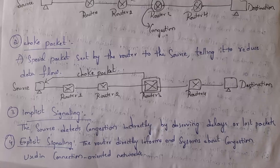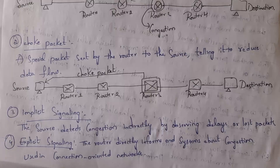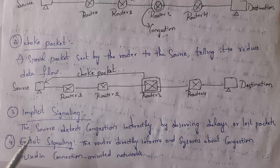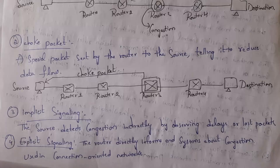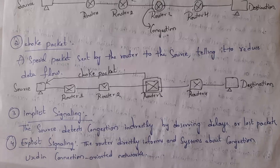The third one is implicit signaling. In implicit signaling, we will not get a reply from the receiver. Instead, the source computer will indirectly identify congestion by observing lost packets and delays. So routers will not give any direct message — the computer will indirectly identify whether congestion has occurred by observing delays and lost packets.